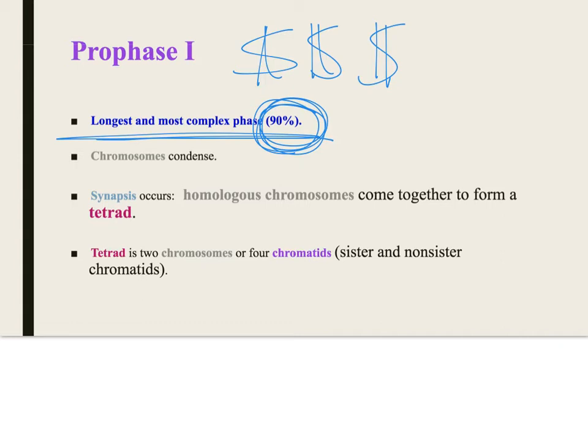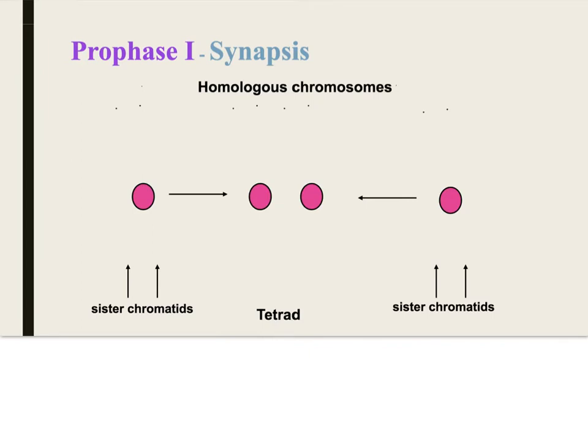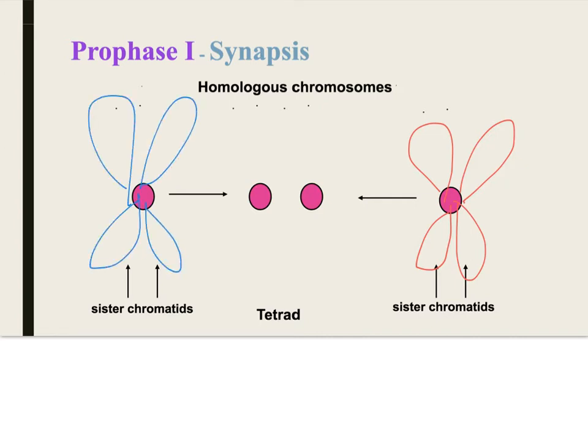So prophase 1 is for the most part the most complex and in many places the most important because you have this business, right? You have four chromatids - or I'm sorry, two chromosomes coming together. This would be like the one from your mom and this would be like the one from your dad. This is a tetrad - you've got four chromatids, one, two, three, four. So here's the chromosome from your dad, and this is the chromosome from your mom, and then you've got your tetrad.